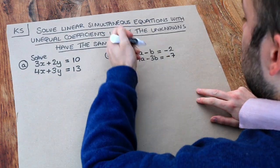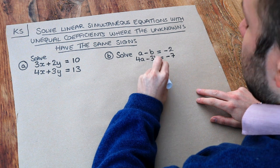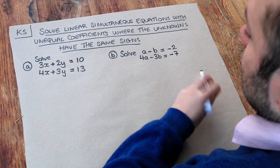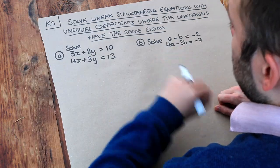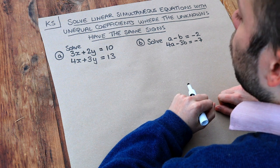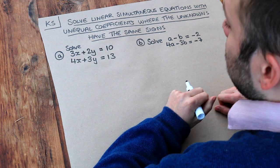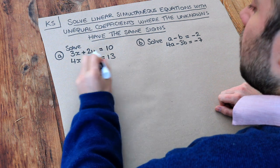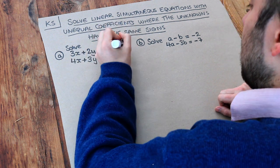Now in the previous two videos on simultaneous equations, we saw how we could either add or subtract the two equations to make either the x or the y disappear, to cancel.